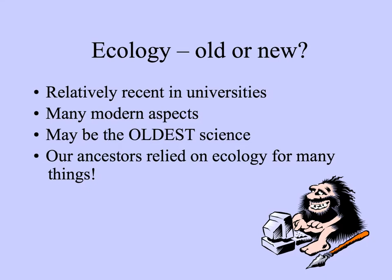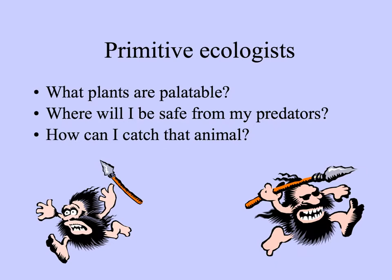Is ecology an old discipline or a new one? Although it's only in the last 50 or 60 years that universities in this country and other countries have had ecology professors, the science has been around for a very long time. In fact, it's probably the oldest science because our ancestors relied on knowing about organisms and their environment for many things. They had to know what they could eat, which plants wouldn't kill them, where they could hide from their own predators, and once they realized they could eat other animals, how they could best catch them — so they had to know something about animal behavior.